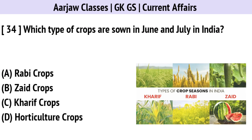Which type of crops are sown in June and July in India? Correct option is C — Kharif Crops.